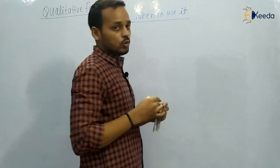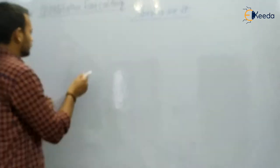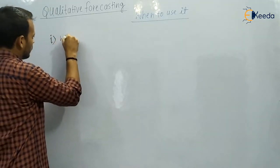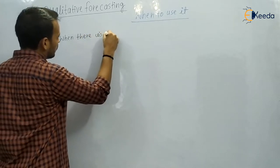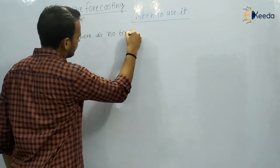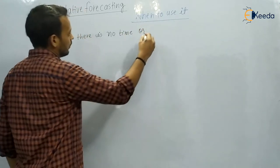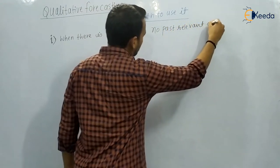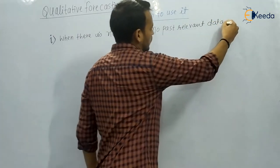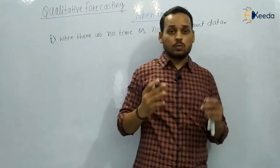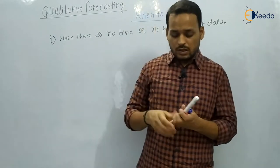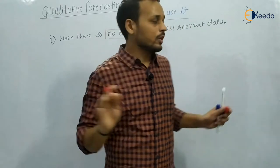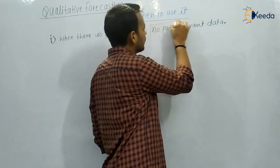Qualitative forecasting is employed when there is no time or no past relevant data. When we are in a hurry to launch a product and we cannot wait for a long time — we have very little time — or when there is no past mathematical record that we can use.